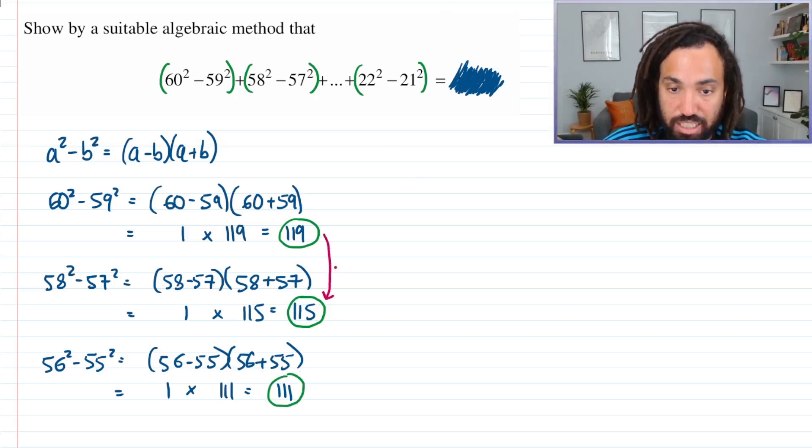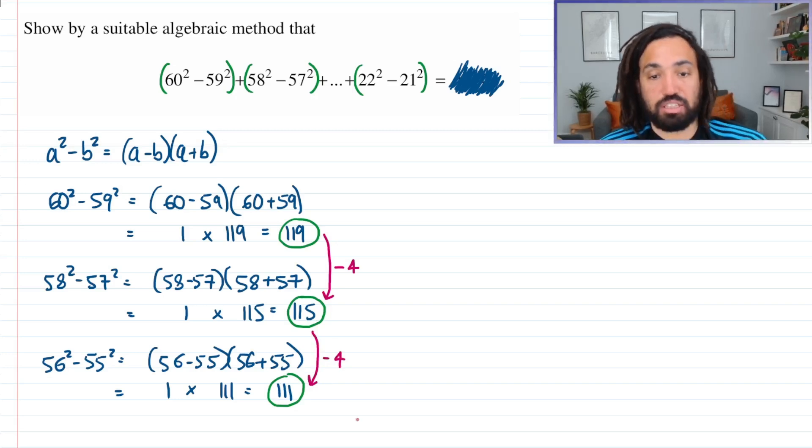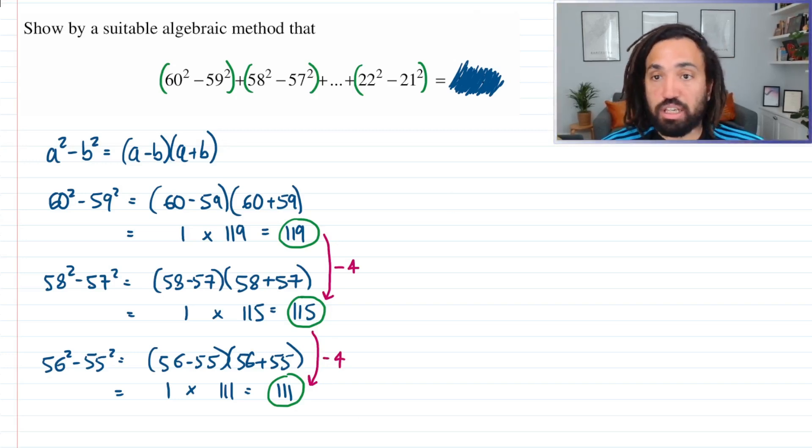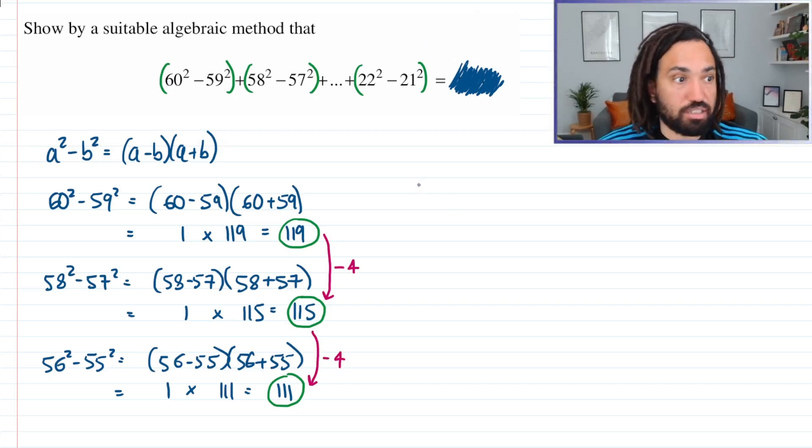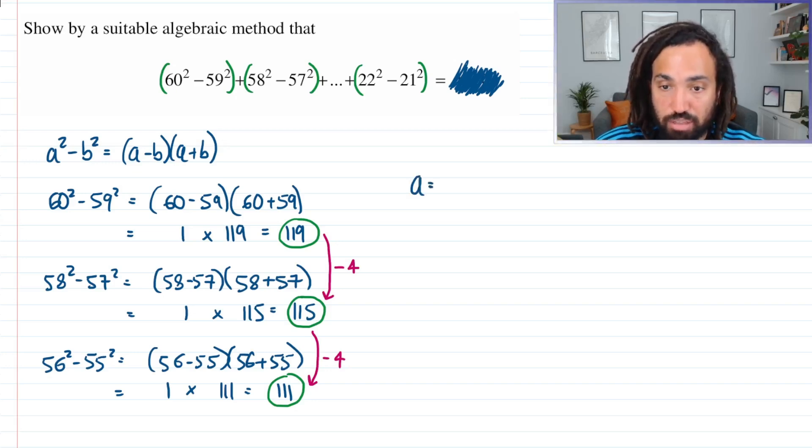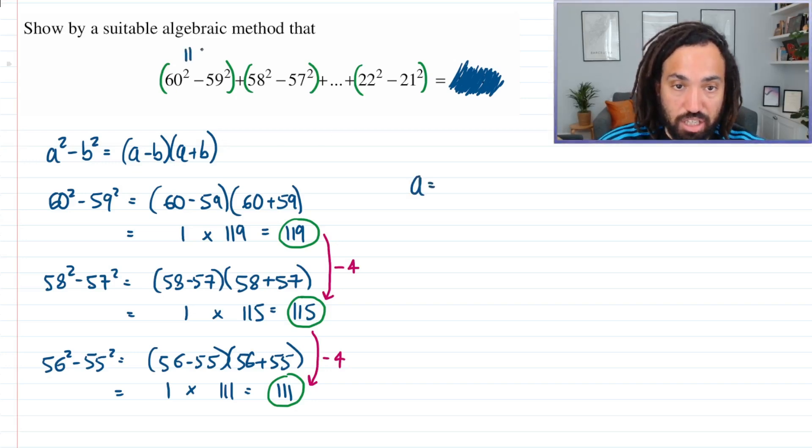So we have an arithmetic series because to get from there to there, that is a common difference of subtracting 4, and that carries on onto the next one as well. Perfect, so we've got arithmetic series - the first term is 119, the common difference is -4.